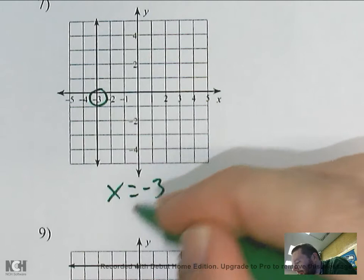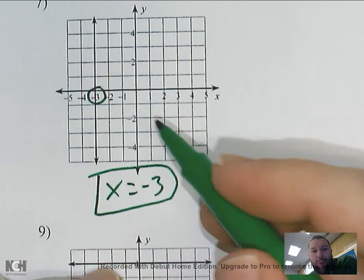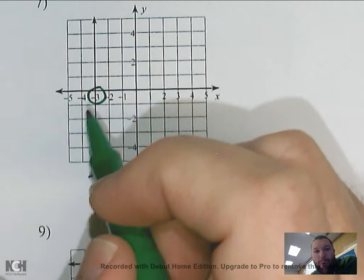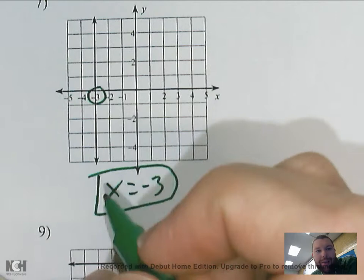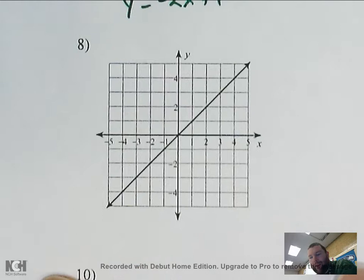What that's saying is that no matter what the y value is, x is always going to equal negative three. If x is always negative three, you get a vertical line — every point shares the same x value, going straight up and down.